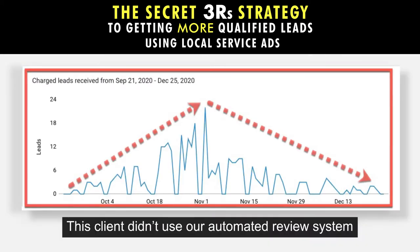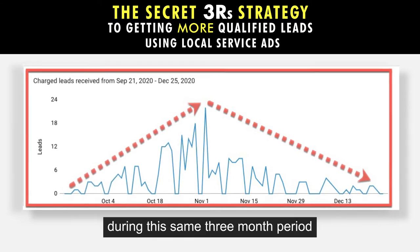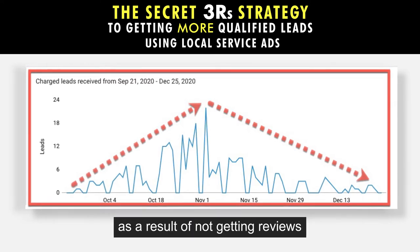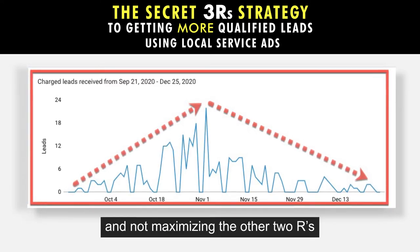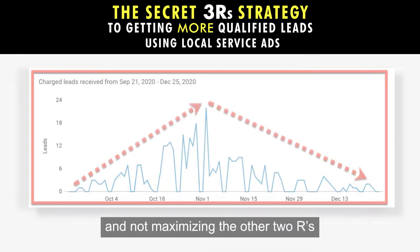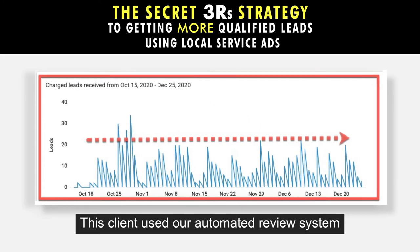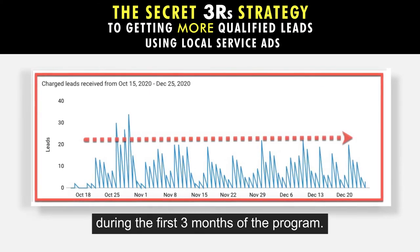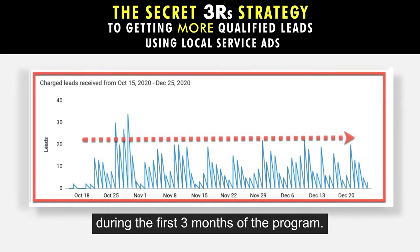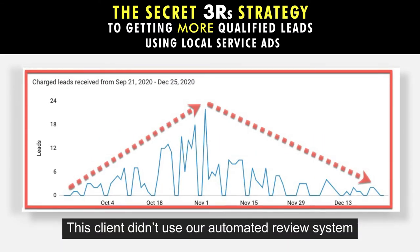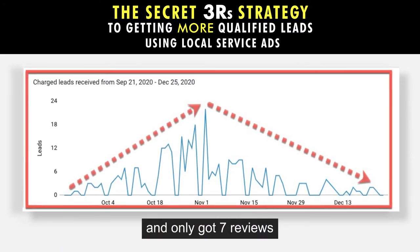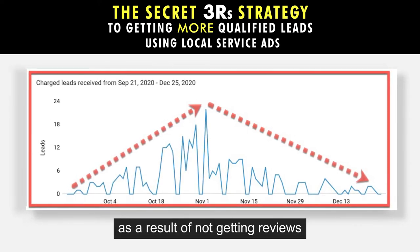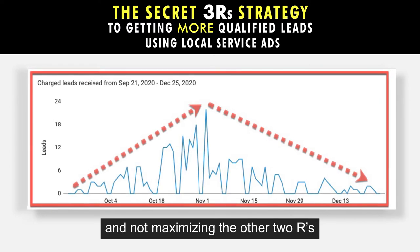While we have not been able to prove that getting more verified reviews leads to better ranking results, we think this might be the case. This client didn't use our automated review system and only got seven reviews during the same three-month period, and noticed the drop in lead volume as a result. This client didn't use our automated review system and got three reviews during this one-month period and noticed the drop in lead volume — they got no verified reviews. This team didn't use our automated review system and got one review during the three-month period, and you can see how few and sporadic the leads were.